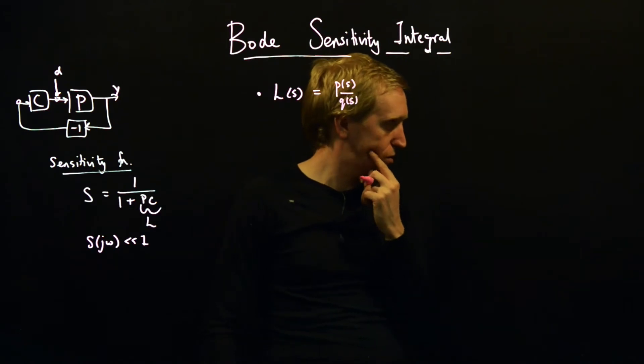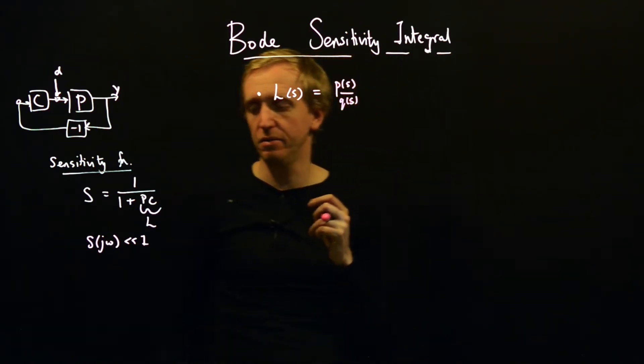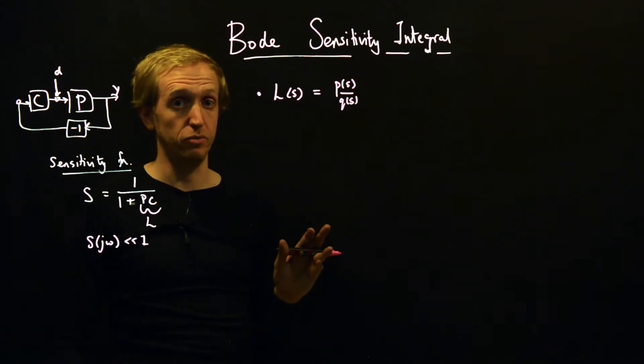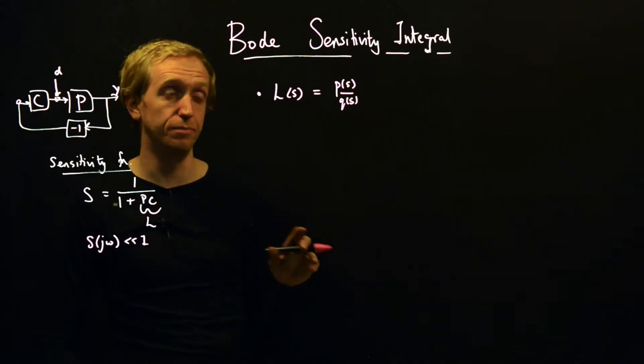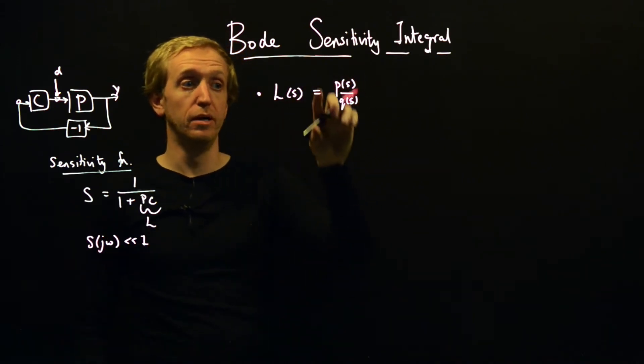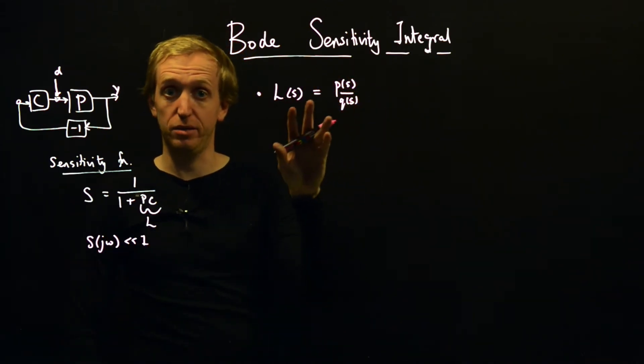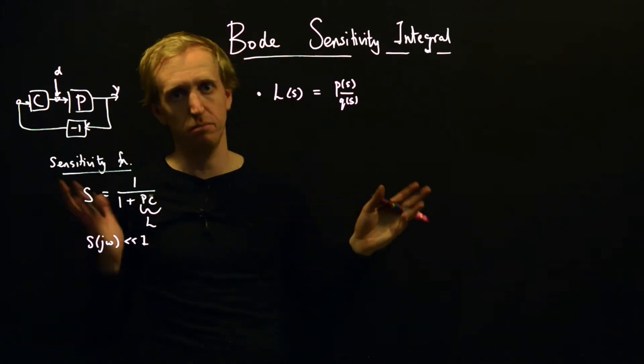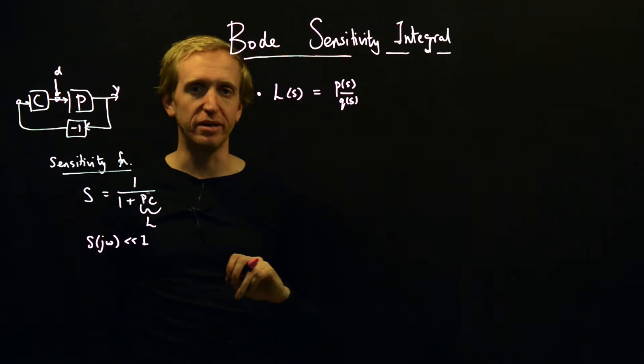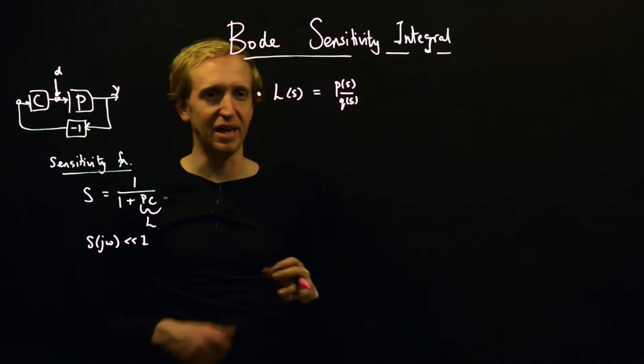So L of s is the ratio of two polynomials, P and Q. I don't remember if I'm honest, but I believe things only get worse when you start to include the effect of delays. So the statement that we're going to give now is just for real rational transfer functions. But don't think you're going to save the day by bringing in delays or anything like that - you're just going to make things even worse.